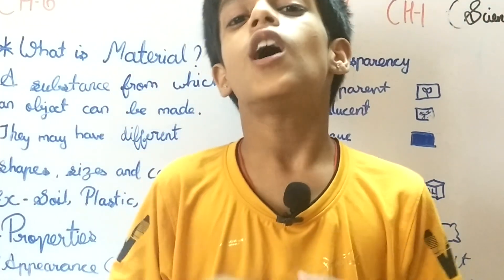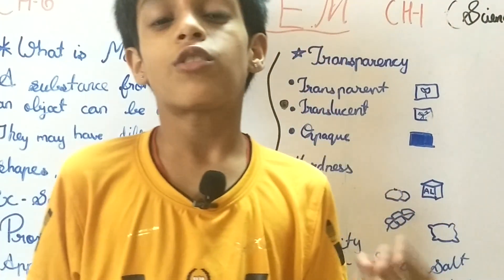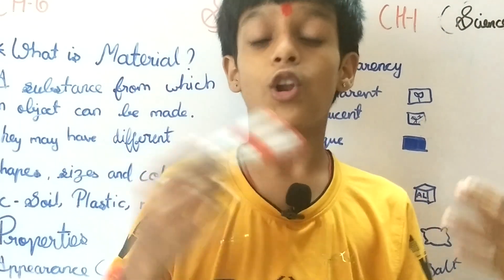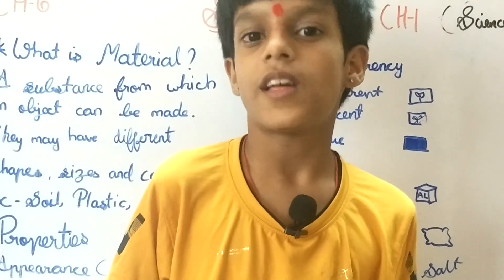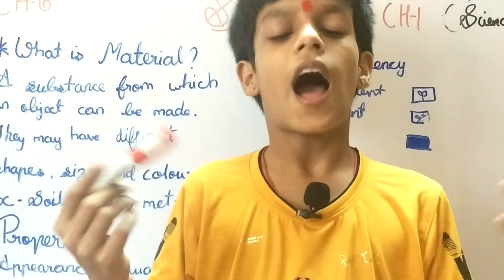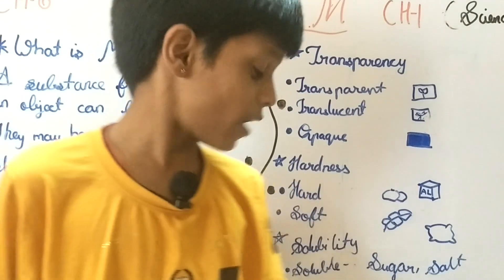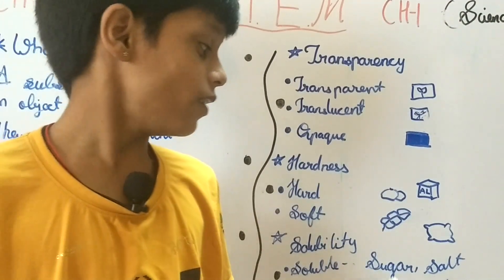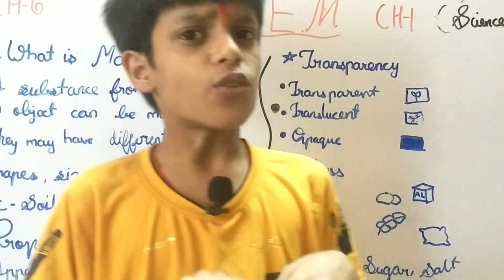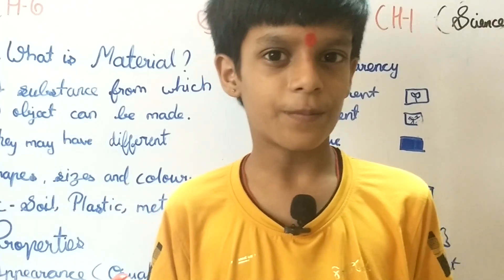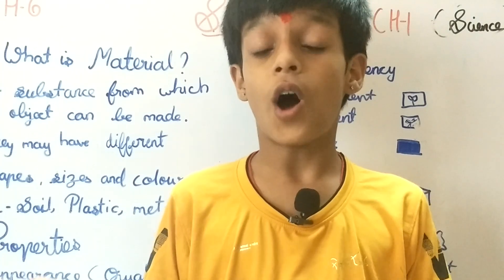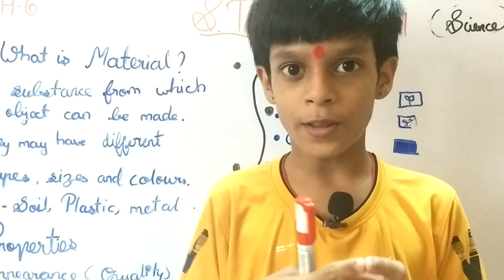Now the last property is solubility. This is also of two types: soluble and insoluble. The object or substance which are soluble in water are called soluble substances, and those which are insoluble in water are called insoluble substances. Examples of soluble are sugar and salt, and insoluble are sawdust and chalk powder. Water is called the universal solvent as it can dissolve many substances.